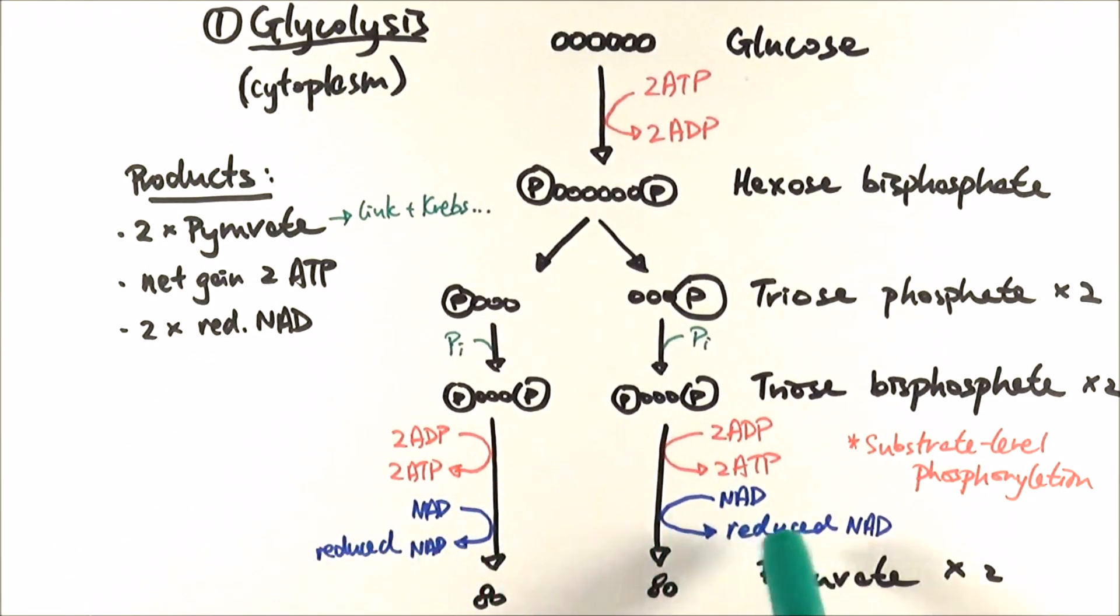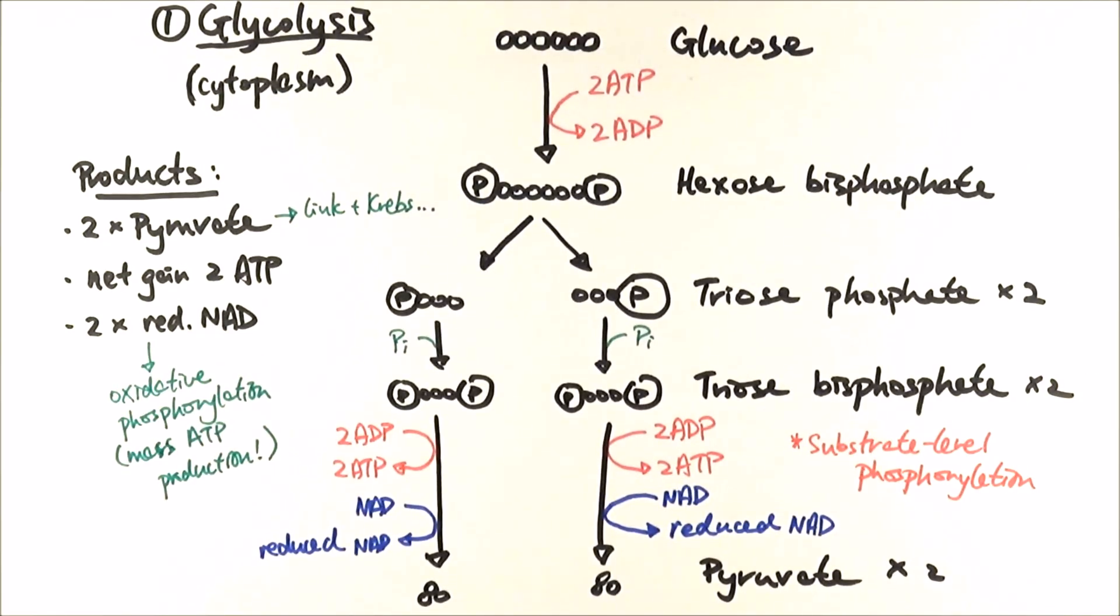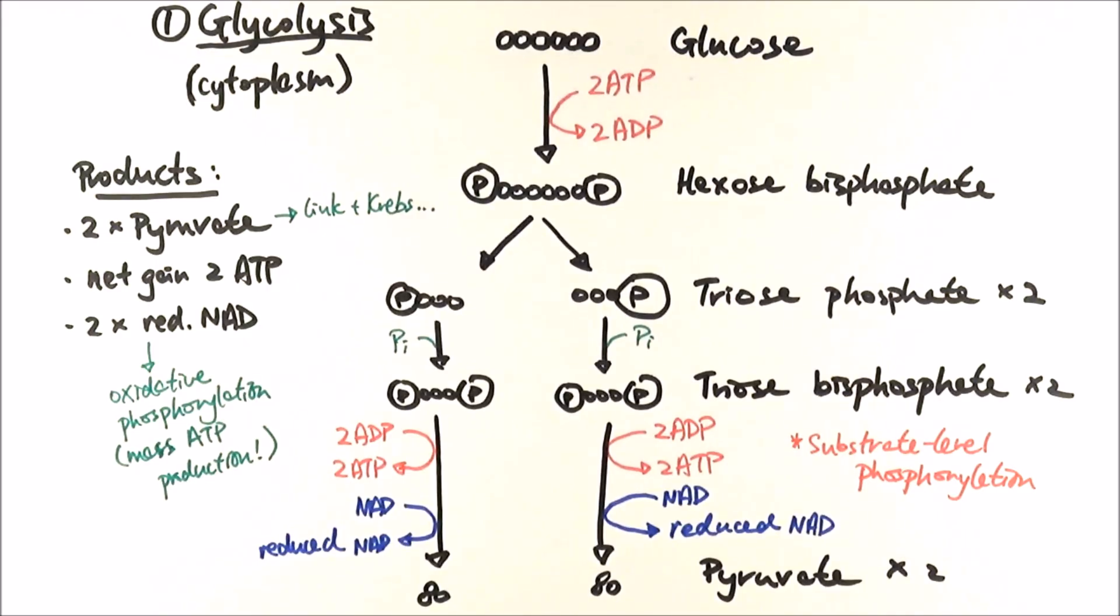It's these ones that actually go on to make lots and lots of it. Each reduced NAD can make three ATP molecules, and that is why it is important that we try to make lots of it. And there you go, this is the process of glycolysis. We will continue on in the next video on link and Krebs cycle.